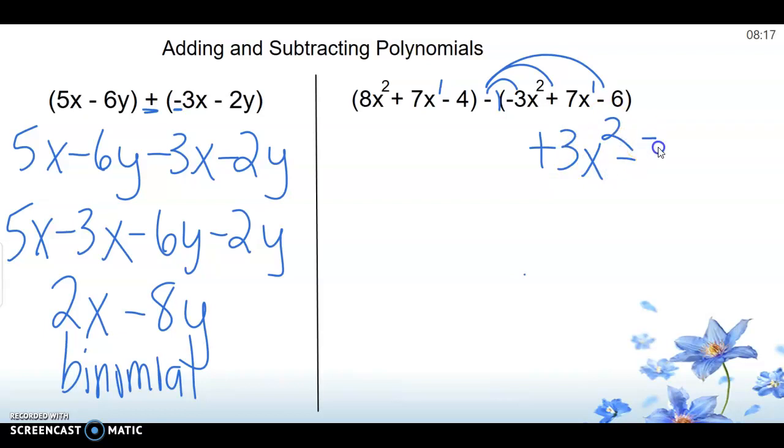A negative times a positive is now negative 7x. And a negative times a negative is now a positive 6. So subtracting actually made all of those signs the opposite. I come back with this and rewrite it as the same thing, because we only distribute to the right.